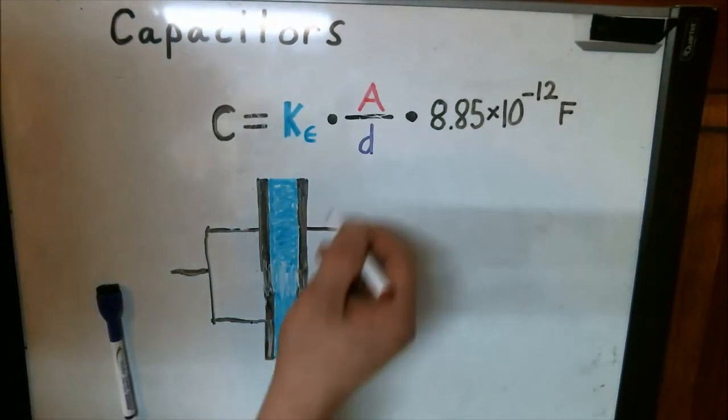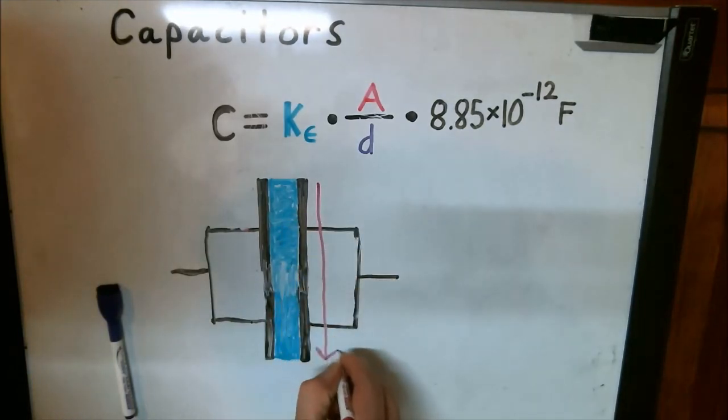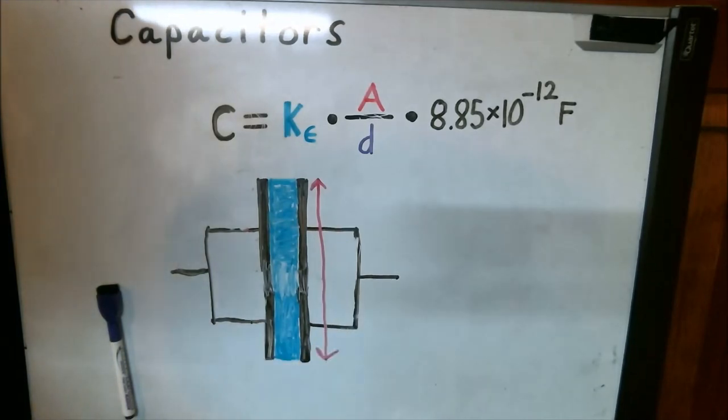And now you can see that the area has doubled. So now we have twice the surface area of the conductive plates. Therefore, our capacitance has doubled. The distance did not change, that has remained the same.